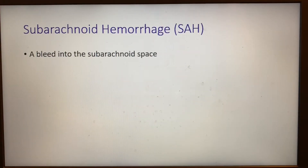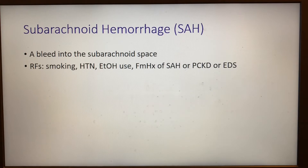The most common item on most people's differential is subarachnoid hemorrhage. This is a bleed into the subarachnoid space, usually caused by a berry aneurysm. Risk factors for this include smoking, hypertension, alcohol use, a family history of subarachnoid hemorrhage or polycystic kidney disease, and sometimes even connective tissue disorders like Ehlers-Danlos syndrome.